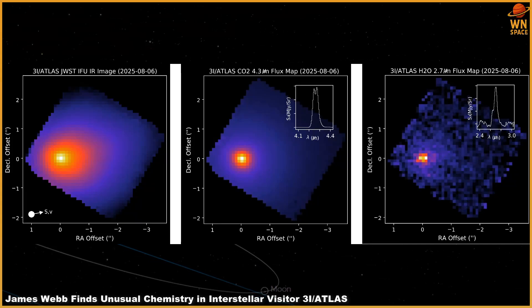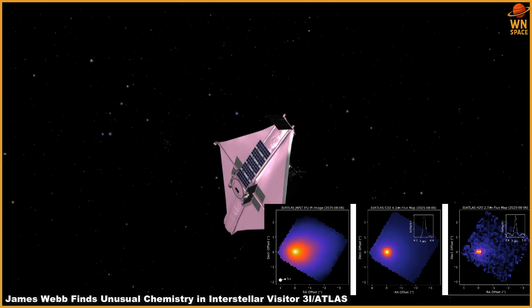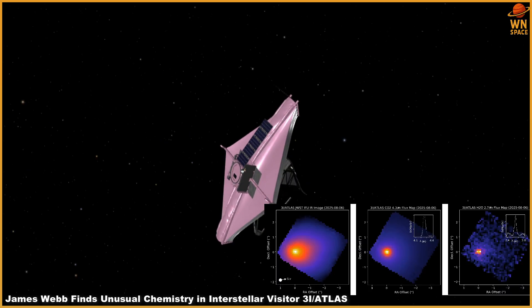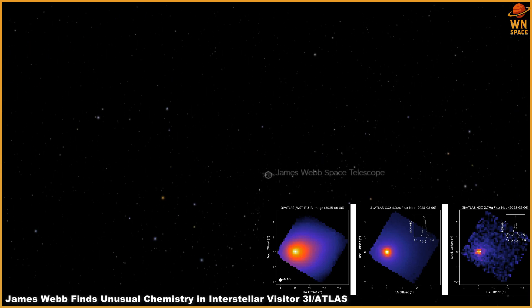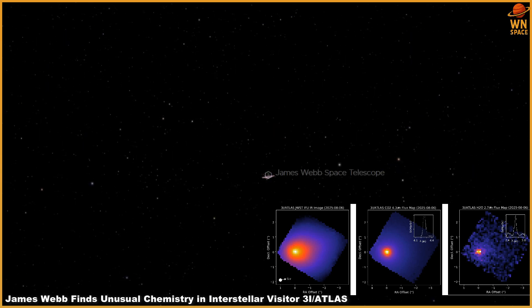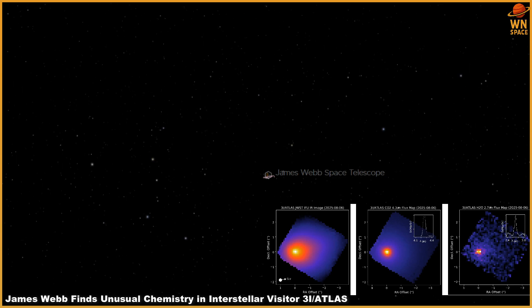In the early hours of July 1st, 2025, astronomers detected something truly extraordinary. The Atlas Survey Telescope in Rio Jutado, Chile, spotted an object moving far too fast to be bound by the gravity of our Sun. Quickly confirmed, it was named 3I Atlas.